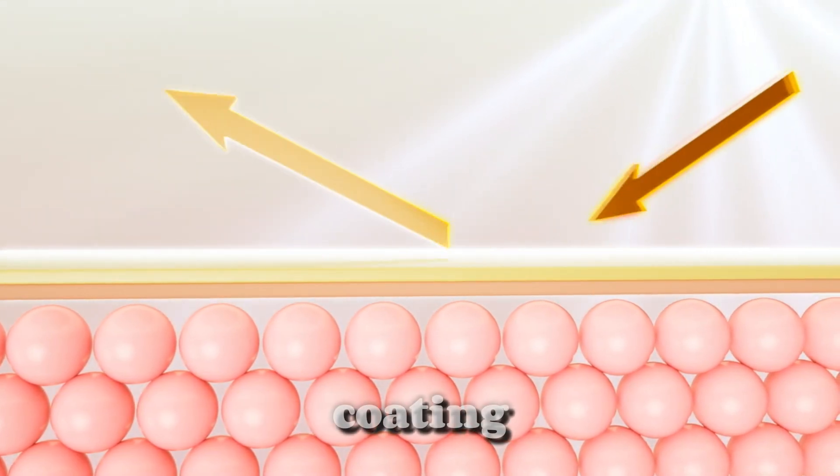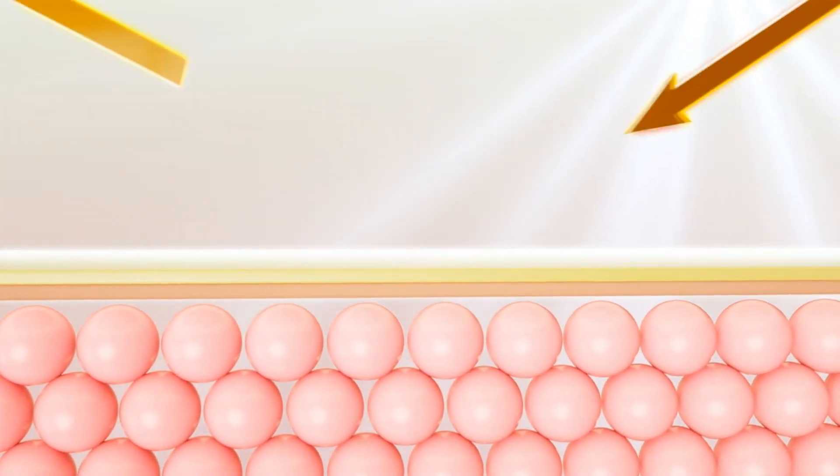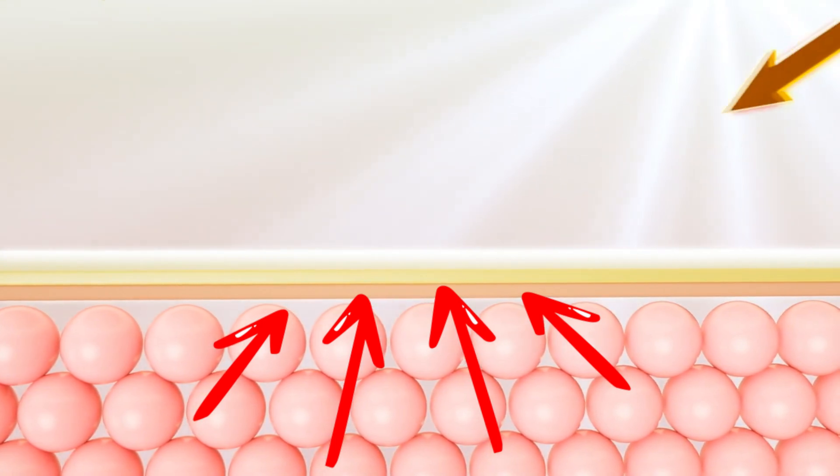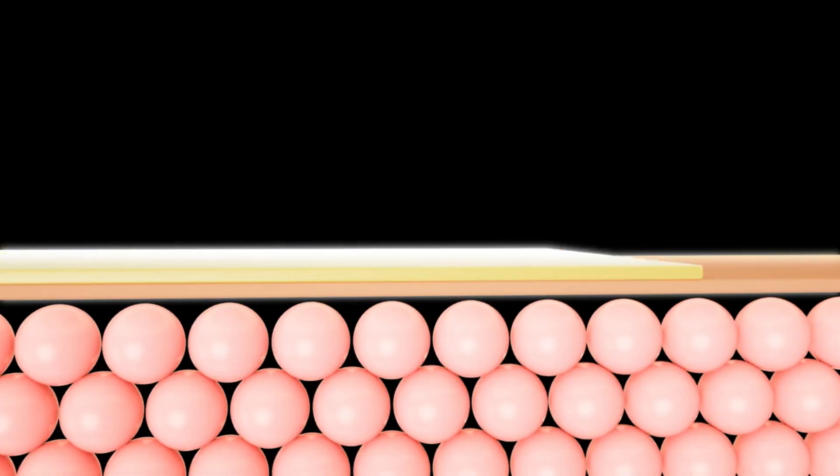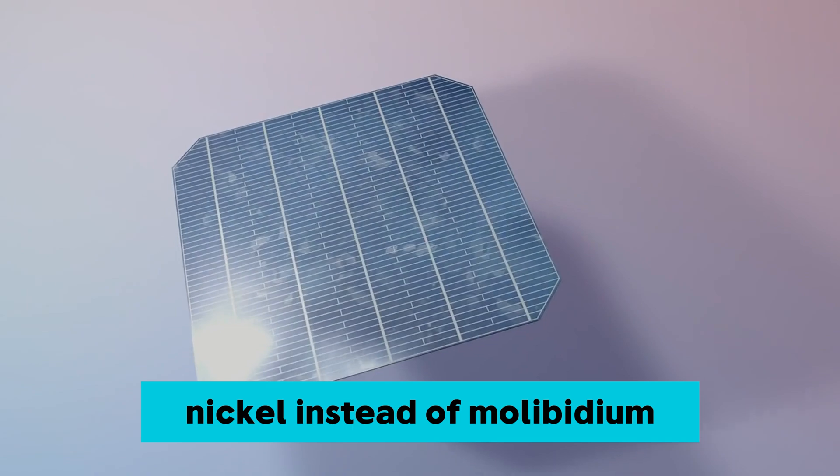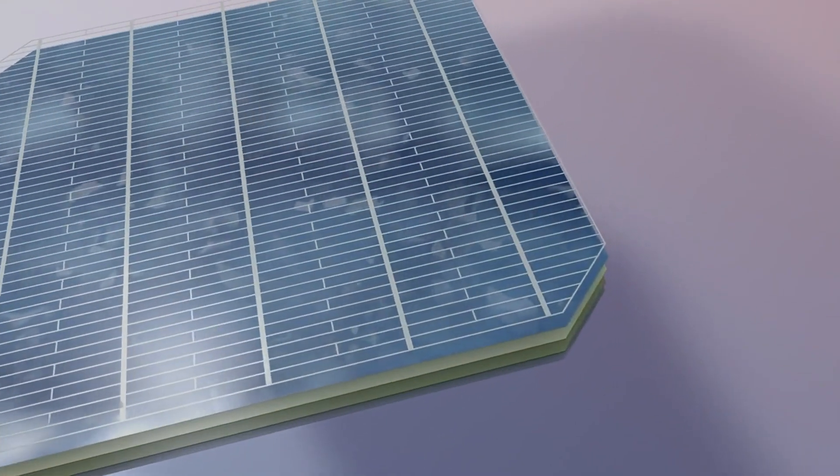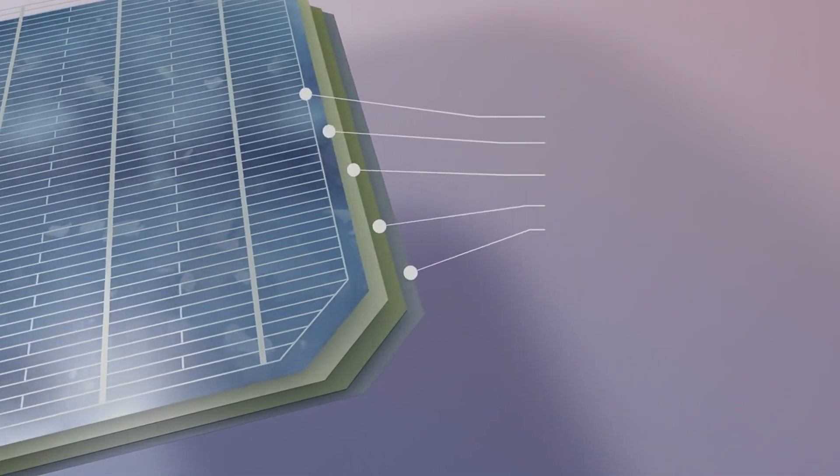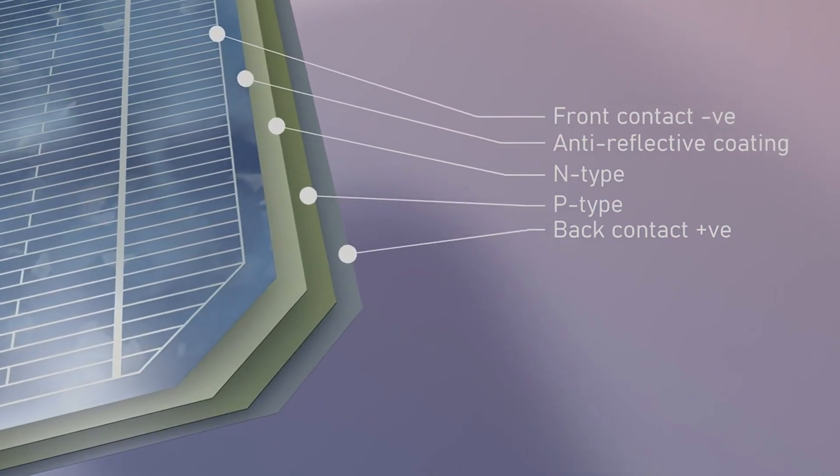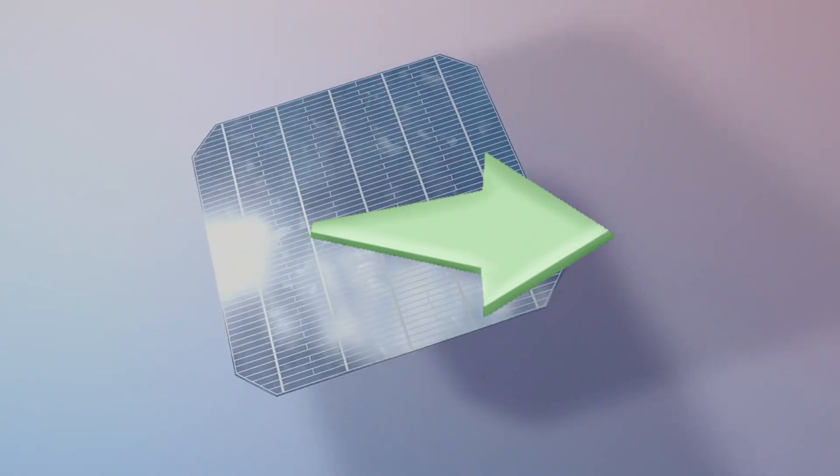Here's what they changed to boost performance. Anti-reflection coating: This simple layer reduced light loss at the surface, letting more sunlight into the cell. Nickel instead of molybdenum: They swapped out the traditional back contact metal with nickel, which improved electrical conductivity, allowing current to flow more efficiently.